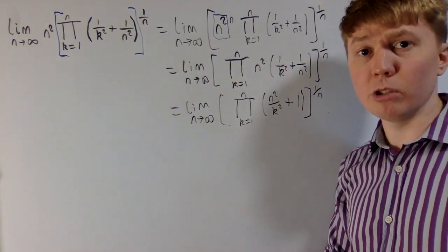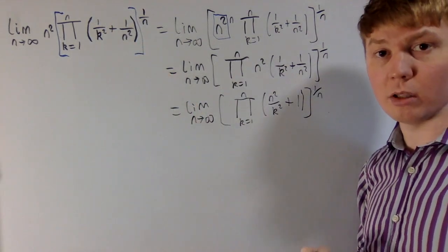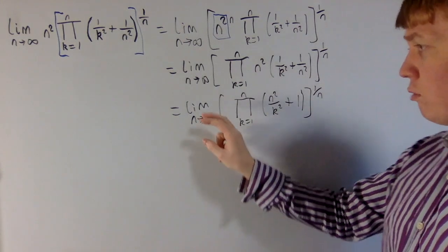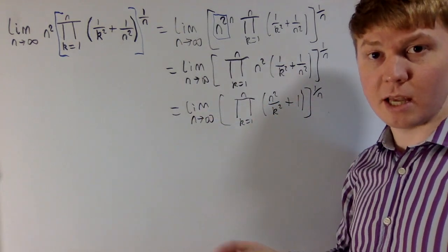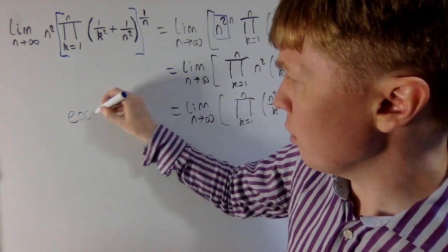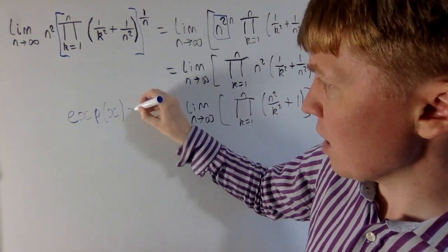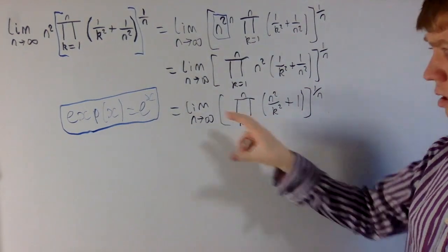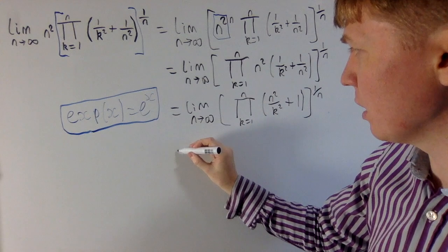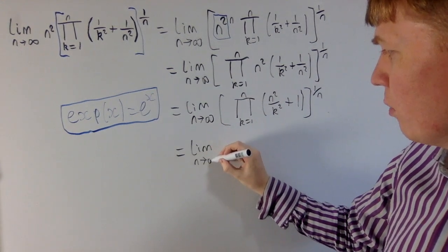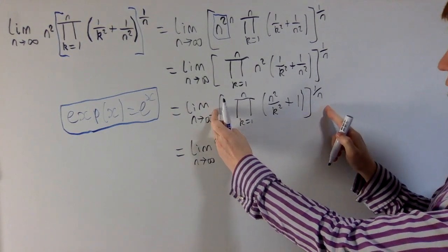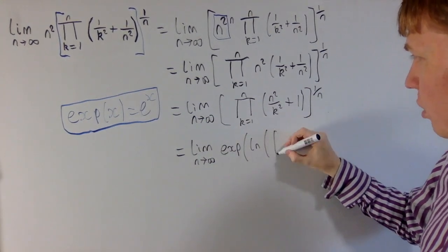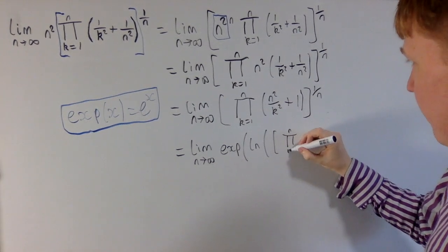A really useful technique when evaluating a product, or especially an infinite product, is potentially taking logarithms of everything and then raising e to that power. We do e to the power of natural log of everything inside this limit — it will just be the same thing. Rather than writing e to the power of everything, I'm going to use the exponential function notation, writing e to the x as exp of x. So we've got the limit as n goes to infinity written as exp of ln of the product to the power of 1 over n.